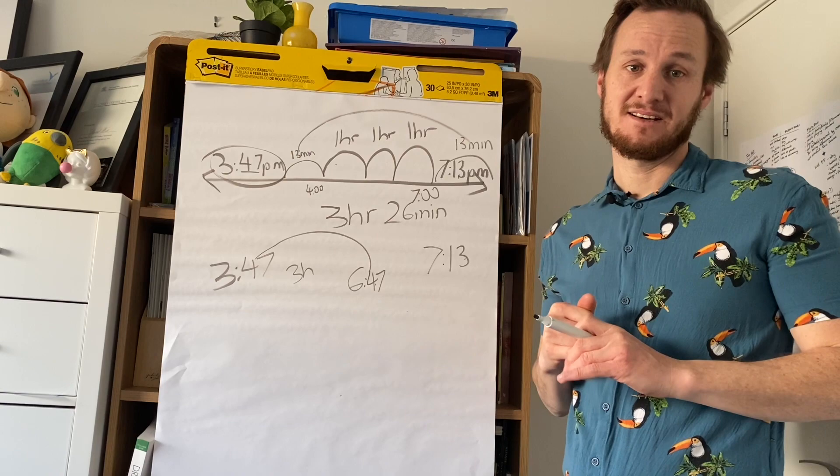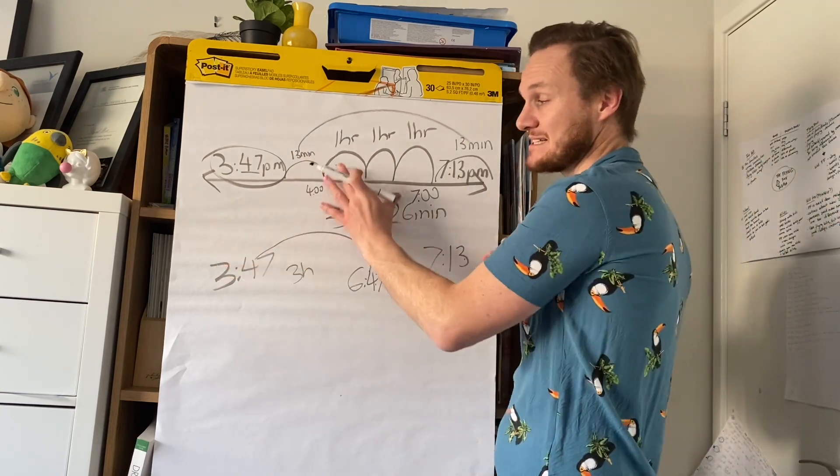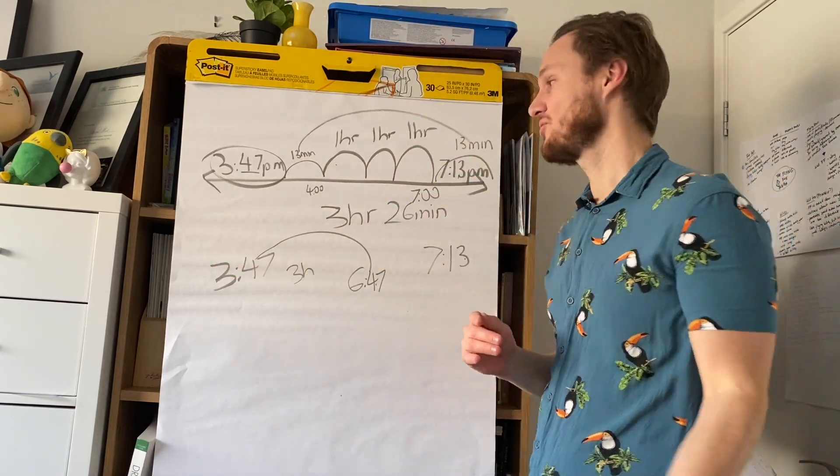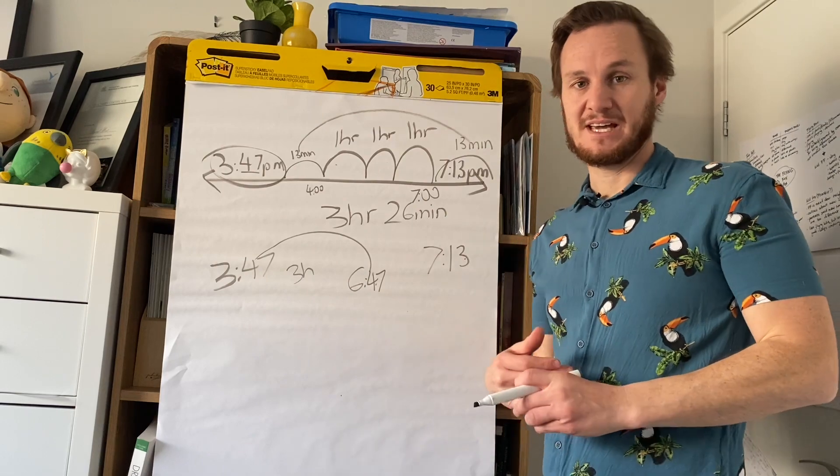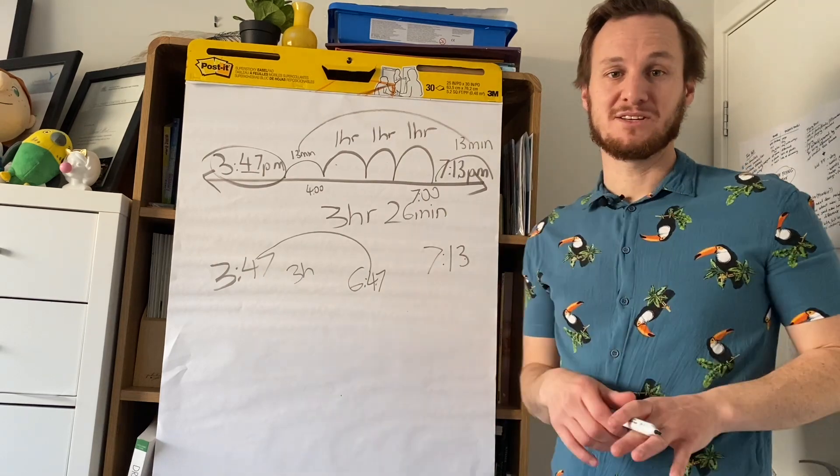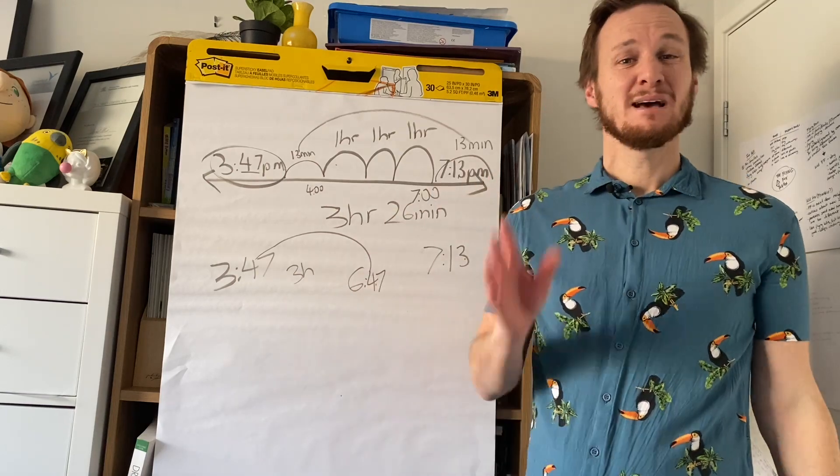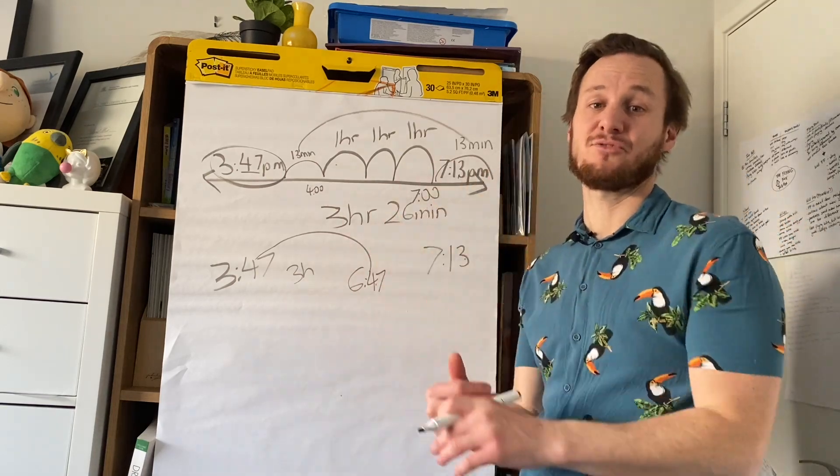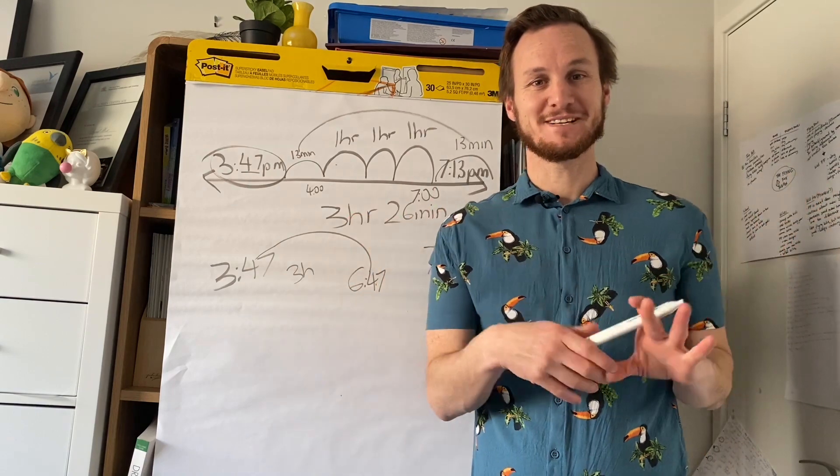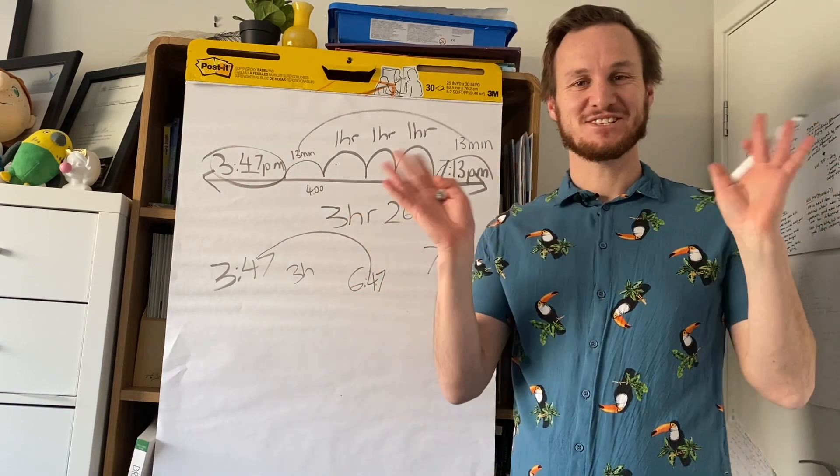Try using the number line, jump to the nearest hour, then do all your hours and then jump the rest of them. I hope that's been helpful. I hope it's been useful. Please let me know what you think of it. If you're having trouble with it, please comment because I can make another one and go through a little bit more. And also make sure you comment about what shirt you want to see next. Thanks for watching.